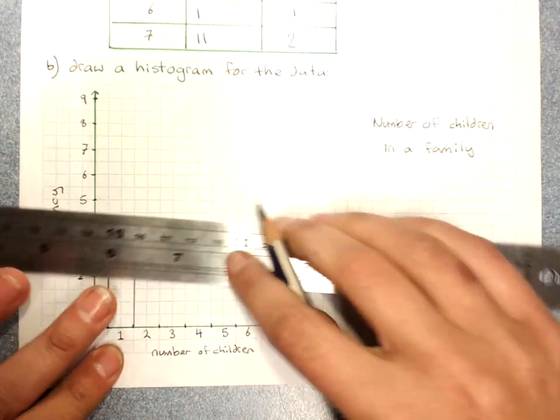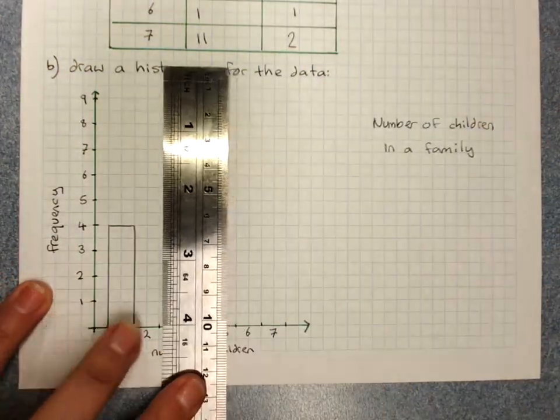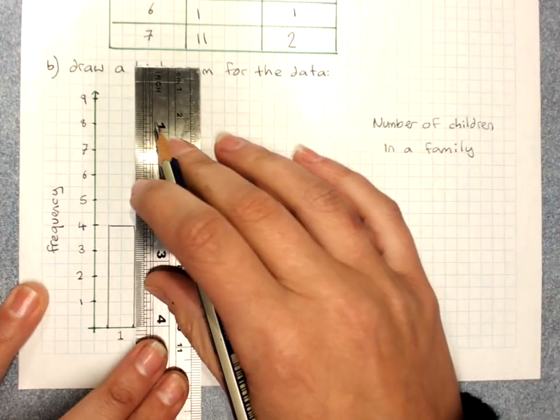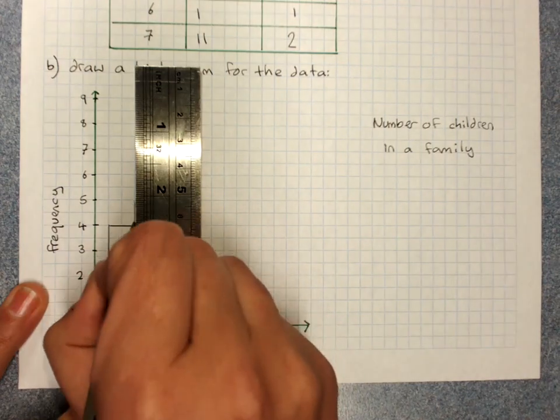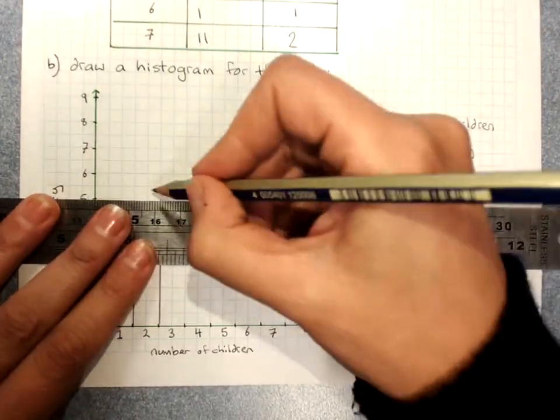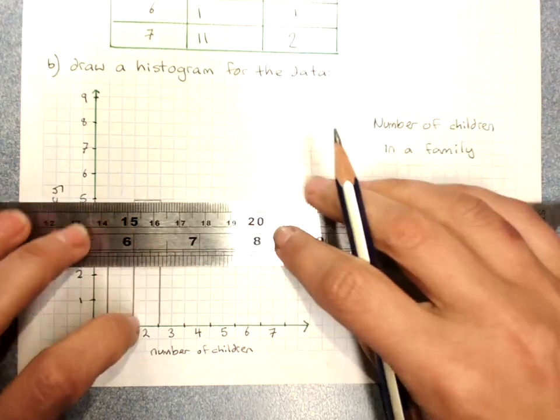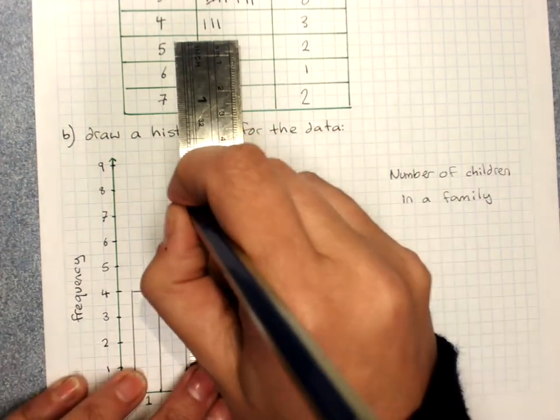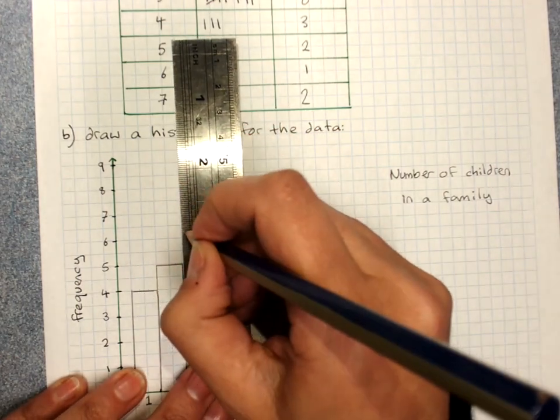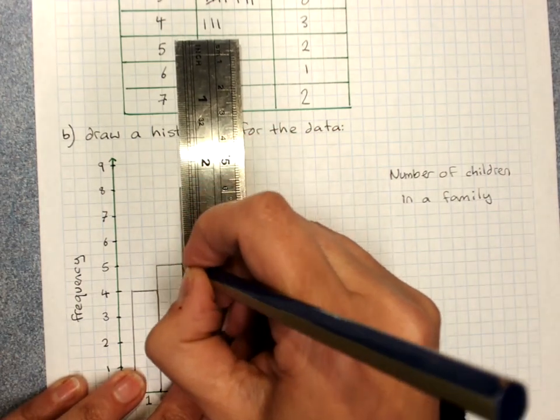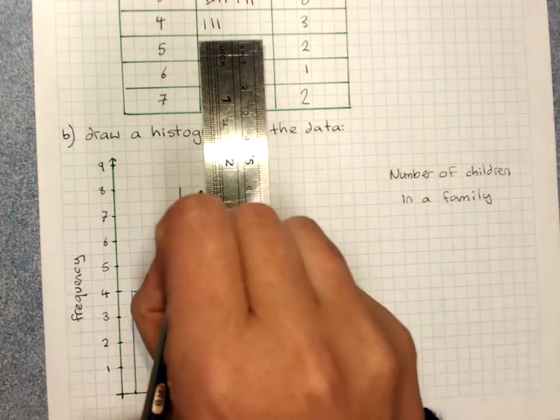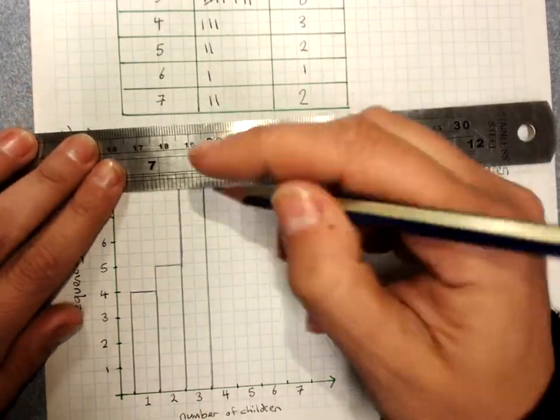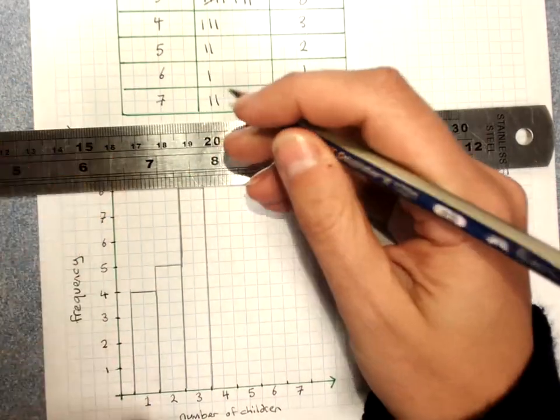Now there's no gap. 5 people had 2 children in the family. And you'll see that just joins on to the next column. 8 people had 3. Be quite careful with your lines. We've got to be neat. You don't colour in columns for a frequency histogram or anything like that. We just leave them as we've drawn them.